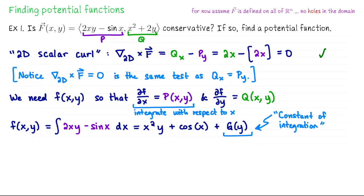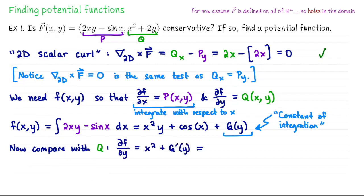This is the form of the potential function, but we don't yet know what g(y) is. It could be a function of y, or just a plain old constant — it covers both cases. So then we come over to our second relationship: df/dy should equal x squared plus 2y, the second component function Q. What I'm going to do is take this expression for f — x squared y plus cosine x plus g(y) — and differentiate it with respect to y, treating x like a constant. We'll compare that with Q: df/dy gives x squared plus 0 plus g'(y), and that needs to equal x squared plus 2y.